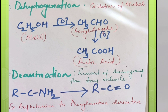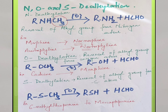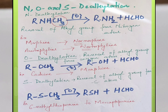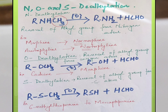Amphetamine gets converted to a phenyl acetone derivative. Next, NOS dealkylation involves removal of alkyl group from nitrogen, oxygen or sulfur atoms respectively. In N-dealkylation, there is removal of alkyl group from nitrogen atom — for example, morphine gets converted to normorphine and amitriptyline gets converted to nortriptyline. In O-dealkylation, alkyl group is removed from oxygen atom — for example, codeine gets converted to morphine. In S-dealkylation, alkyl group is removed from sulfur atom — for example, 6-methyl thiopurine gets converted to mercaptopurine.